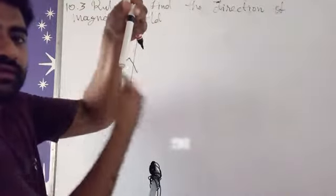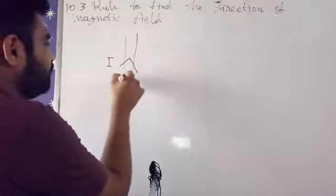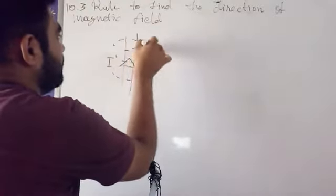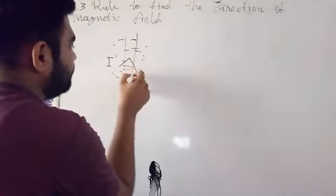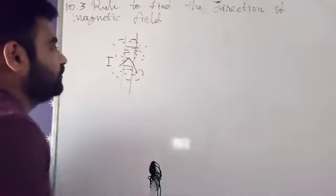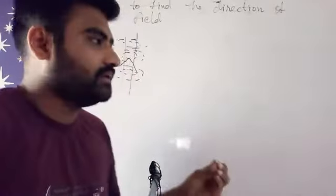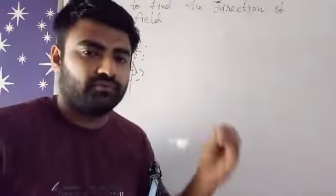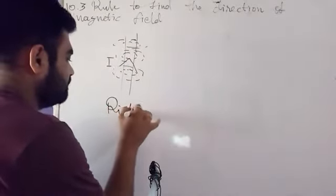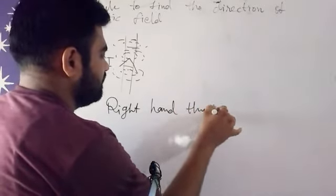This is how we can get magnetic field direction by right-hand thumb rule. This method is called right-hand thumb rule.